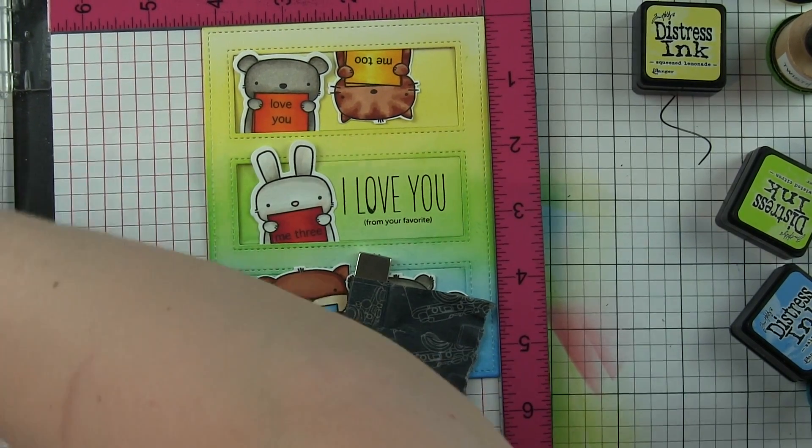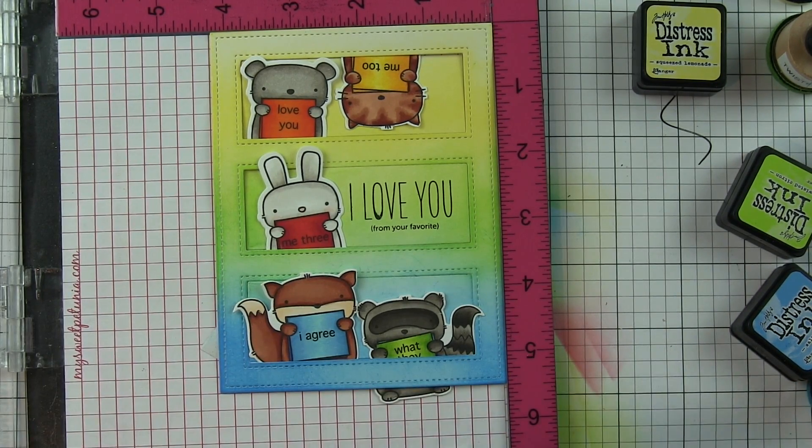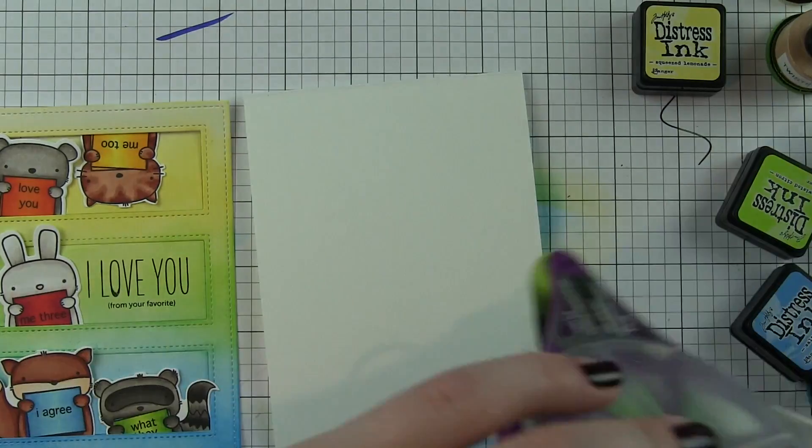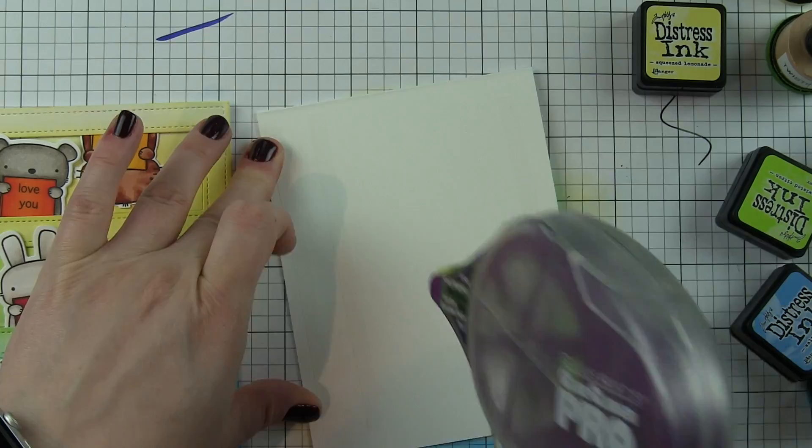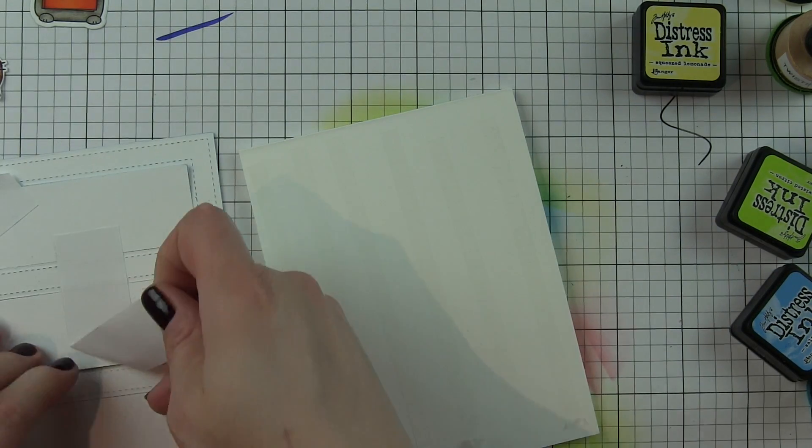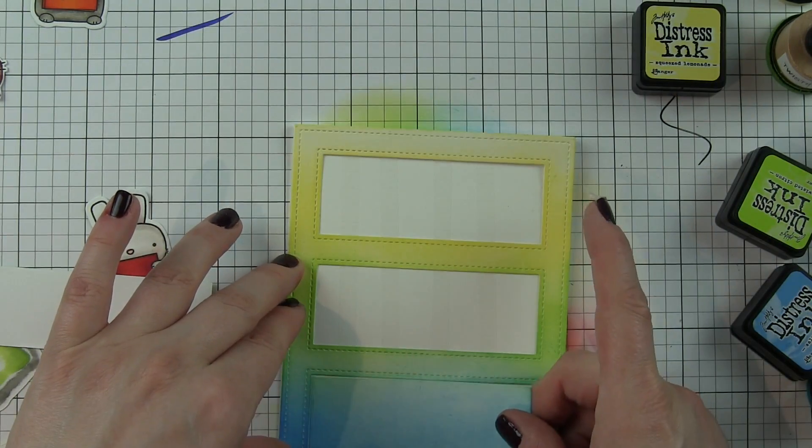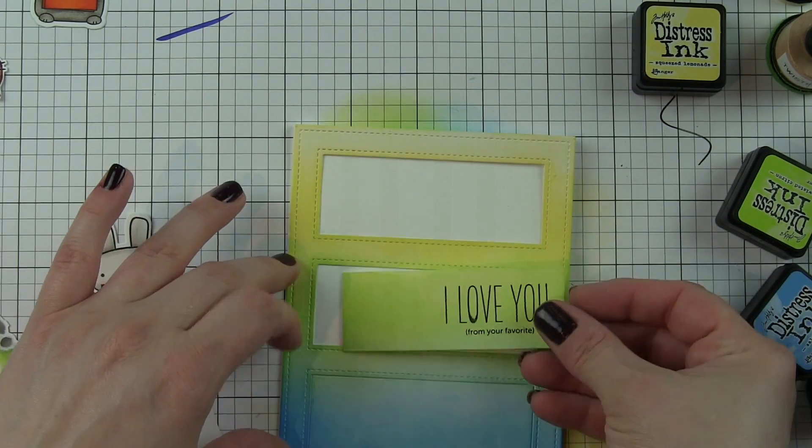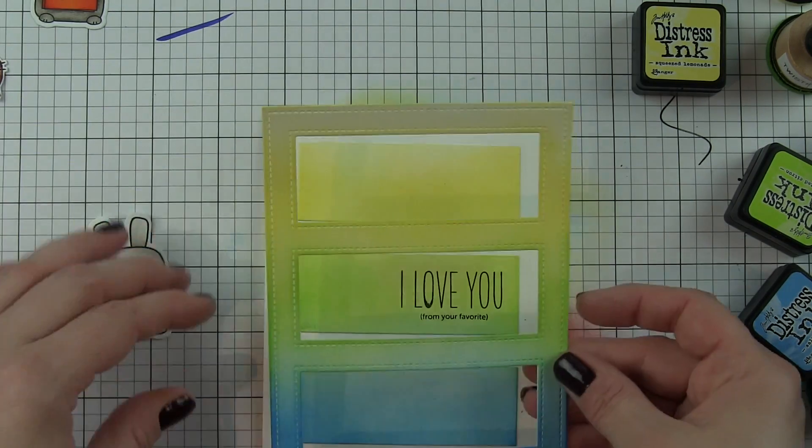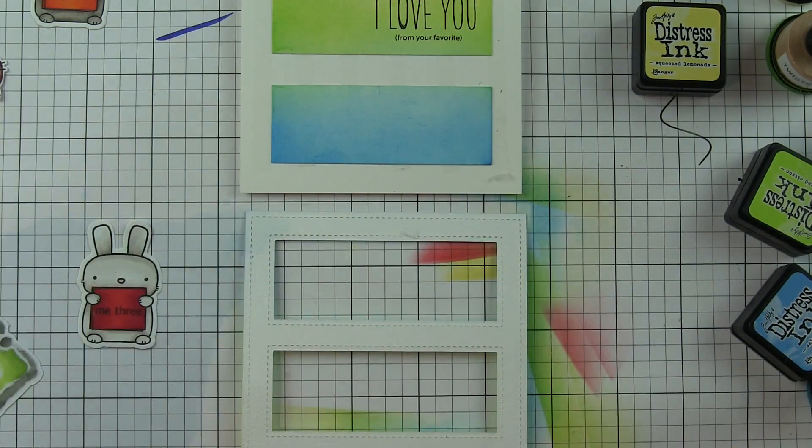Once I have that in place, I'm ready to start putting it all together. I want to start with the frame and use it as a guide to place those long rectangle inside pieces flat on the front of a top fold card base. I'm going to put adhesive all over my card base, remove the post-it tape from the back that was holding everything together, and use this frame as a guide. Then I'm going to take the frame and add foam adhesive to that to pop it up.